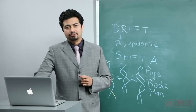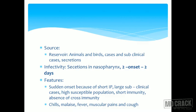Features of influenza include sudden onset due to a short incubation period, a large subclinical portion, high susceptible population, short immunity, and absence of cross-immunity. This creates a very favorable atmosphere for disease outburst, allowing it to spread very fast. Clinical symptoms include chills, malaise, fever, muscular pain, and cough.